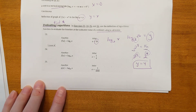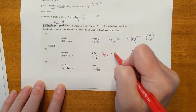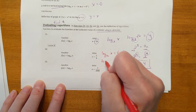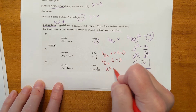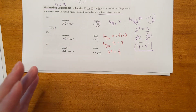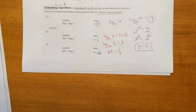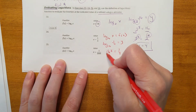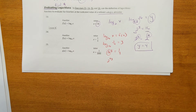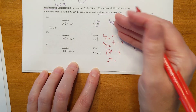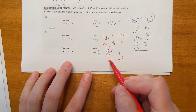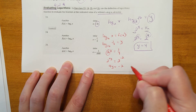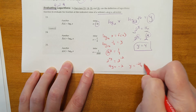Next: log base 16 of 1/4 equals y, which gives 16 to the y equals 1/4. Get the same base — using 2: 16 is 2 to the 4th, so the left side is 2 to the 4y. And 1/4 is 2 to the negative 2. Same base, so set exponents equal: 4y equals negative 2, divide through, and y equals negative 1/2.